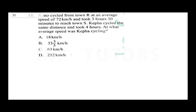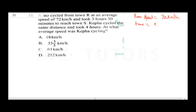Notice Ronu's speed was 72 km per hour and his time was 3.5 hours. Let's convert the 30 minutes to hours because we are dealing with km per hour. Remember, your speed is equal to distance over time.